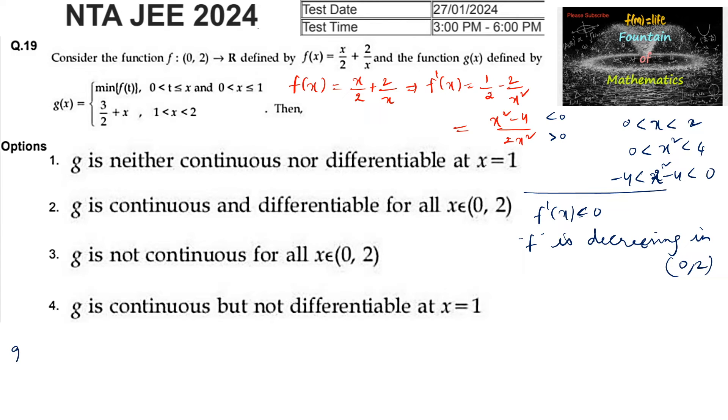Now for the g(x) function, we write the minimum of f(t) for 0 < x ≤ 1. Since f is decreasing, g(x) = x/2 + 2/x for 0 < x ≤ 1, and g(x) = 3/2 + x for 1 < x < 2.